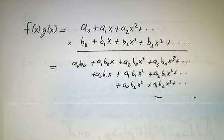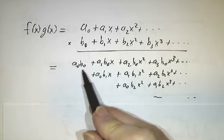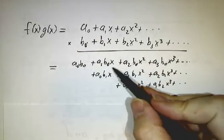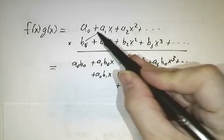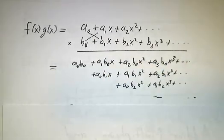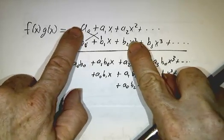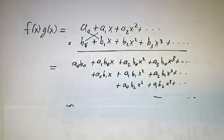What you notice is even though you have an infinite number of terms, there's only one constant term. The only constant term comes from a0 times b0. There are only two terms that involve just one power of x, namely this term and this term. There are three terms that involve an x squared. This product times this product times this product. There are four that involve x cubed and so on.